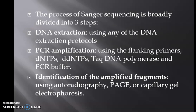The process of Sanger sequencing is broadly divided into three steps. The first one is DNA extraction, using any of the DNA extraction protocols. PCR amplification using the flanking primers, dNTPs, ddNTPs, Taq DNA polymerase and PCR buffer. And finally identification of the amplified fragments using autoradiography, PAGE, or capillary gel electrophoresis.